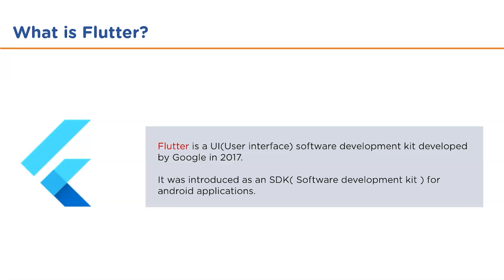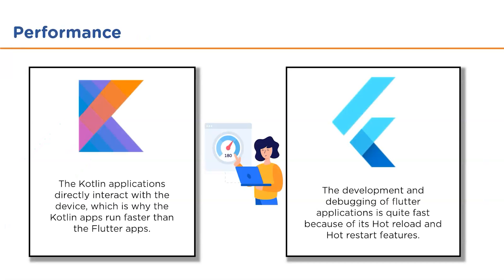Now let's compare Kotlin and Flutter in terms of performance. Kotlin applications directly interact with the device, which is why Kotlin apps run faster than Flutter apps. Also, the Kotlin code compiles in the same format as the platform it is written for, making it more suitable for cross-platform mobile app development. On the other hand, Flutter's debugging and development process is quite fast because of its hot reload and hot restart features, which allow developers to change code instantly and see its effect.